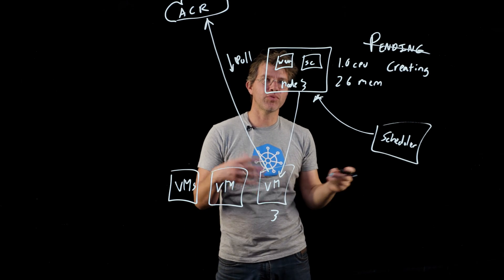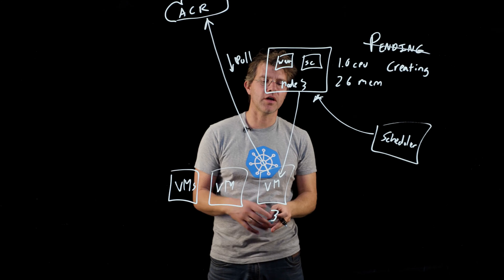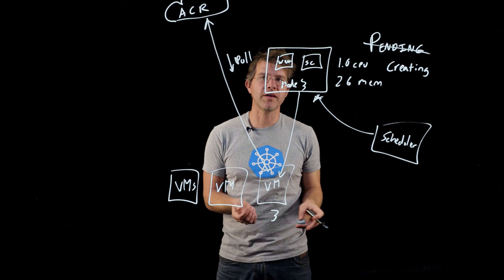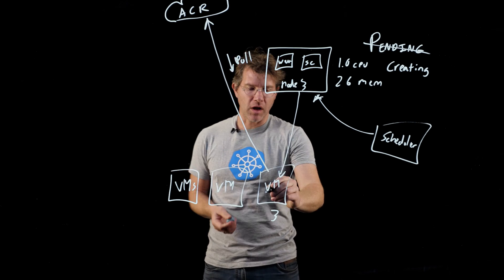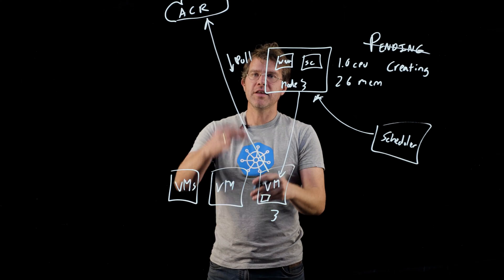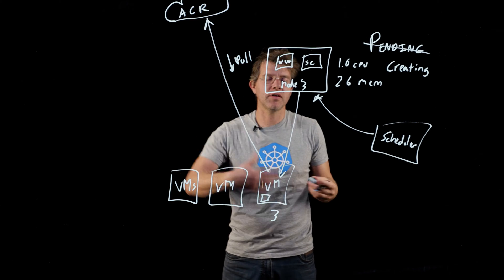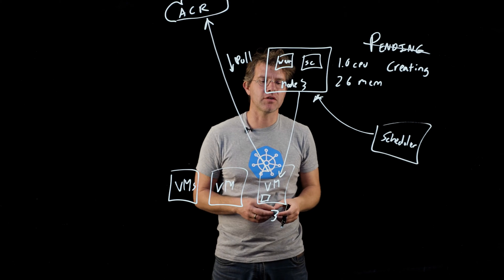Now, actually, Kubernetes has a preference for scheduling containers onto nodes where the image is already present. So it's possible that if the image is already present on this node, this pull step will be skipped because it obviously doesn't need to happen if the image is already there.